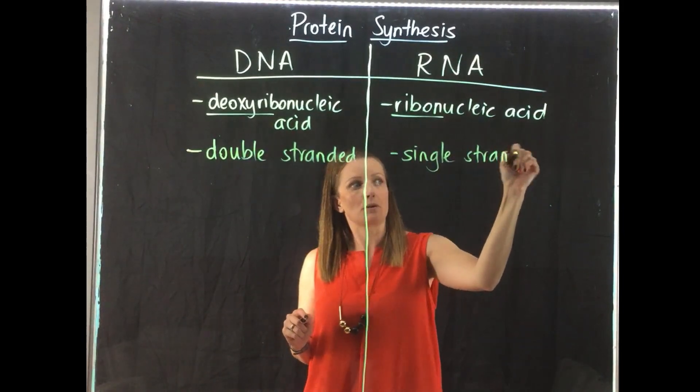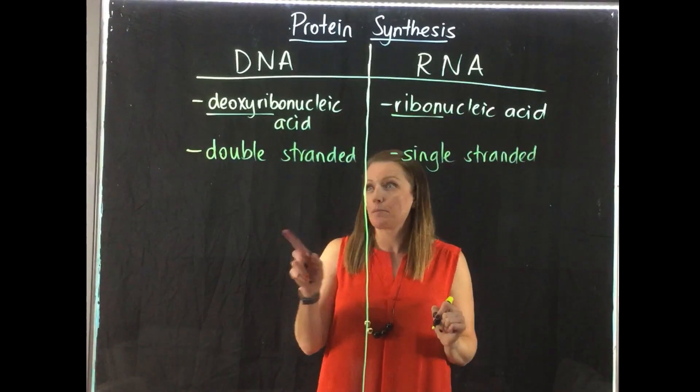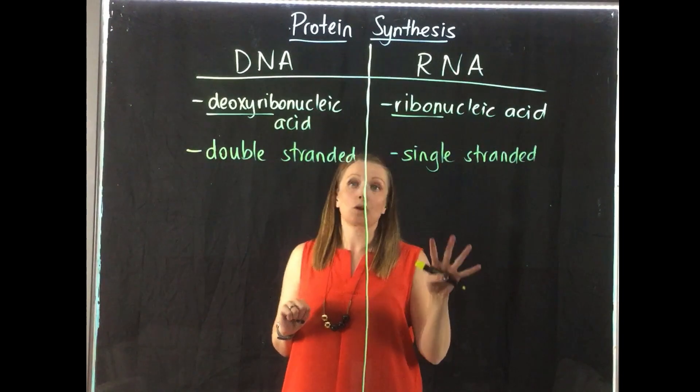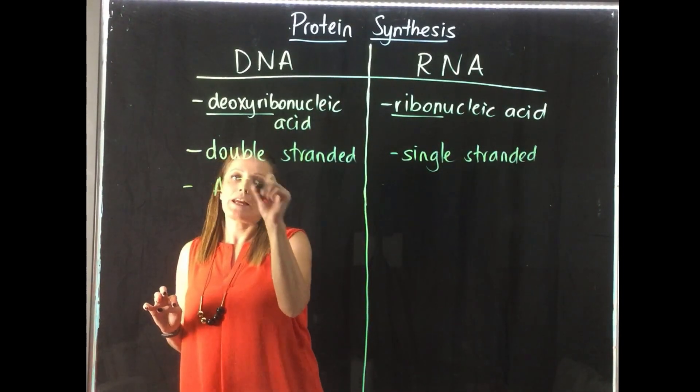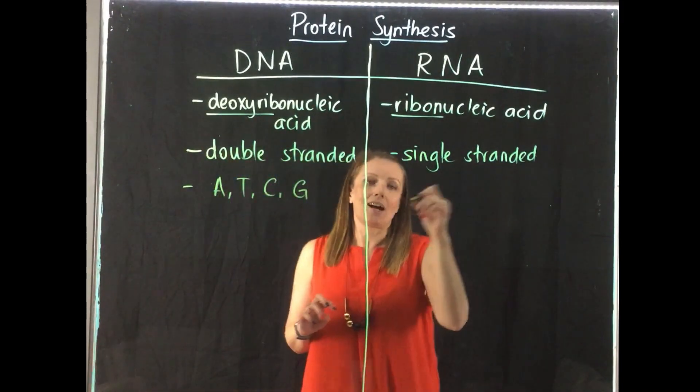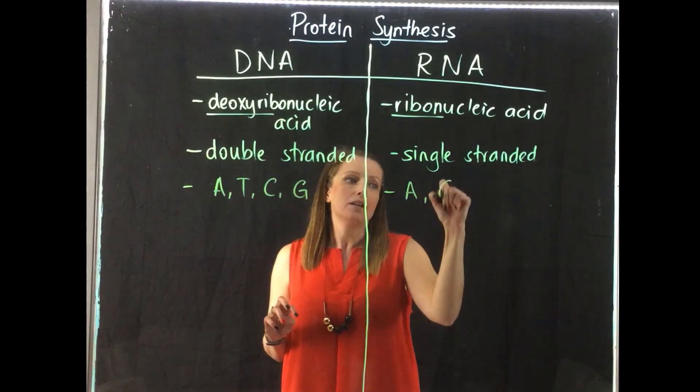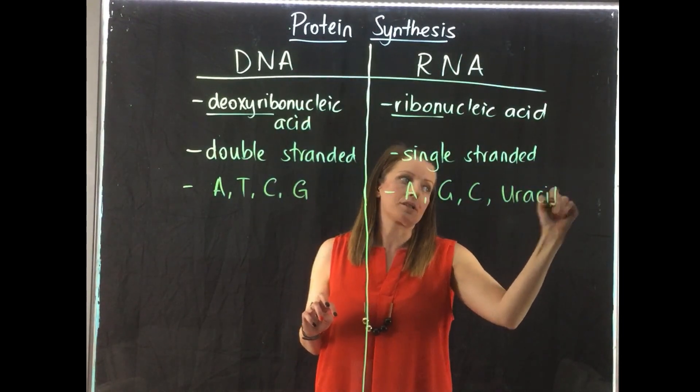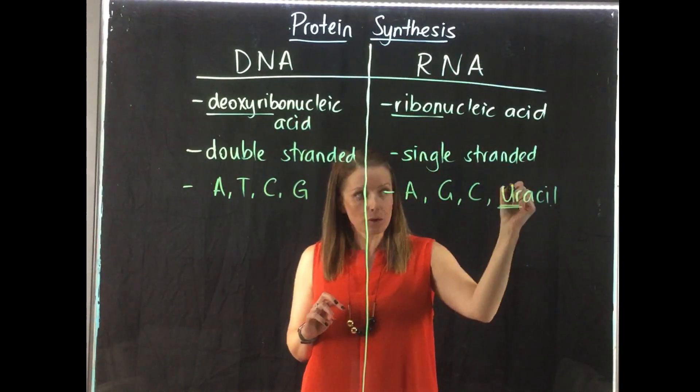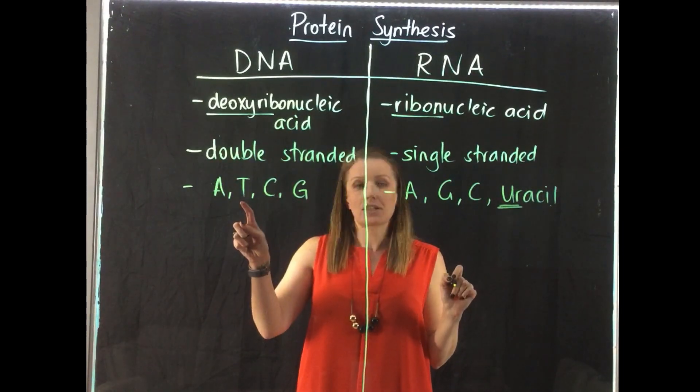We also know that DNA is made up of four different bases, and so is RNA, but the big difference is DNA is made up of A, T, C, and G, whereas RNA is made up of A, G, C, and a new base called uracil. So we have a U now, and we don't have our T.